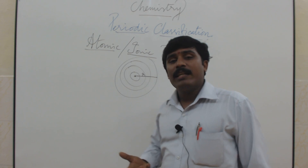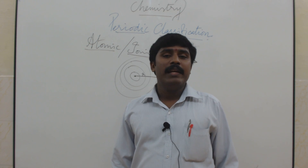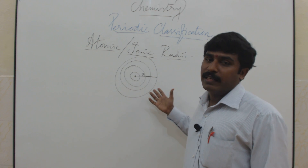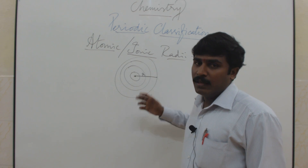If it is an atom, that distance is called atomic radius. If it is an ion, that distance is called ionic radius.